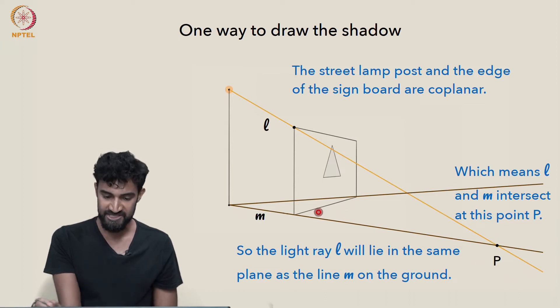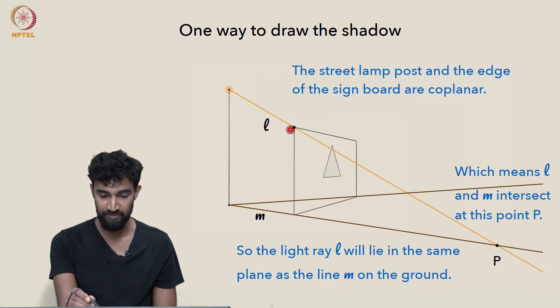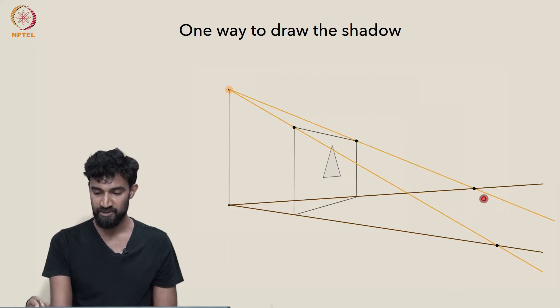So, these lines intersect here and that means that this point P is the projection of this point up here. And similarly, we can project this other corner of the sign board to this point here. So, now we get two more points on the ground plane. What can we do? We can connect them and get a line on the ground plane which is the image, the shadow of this top edge of the sign board.